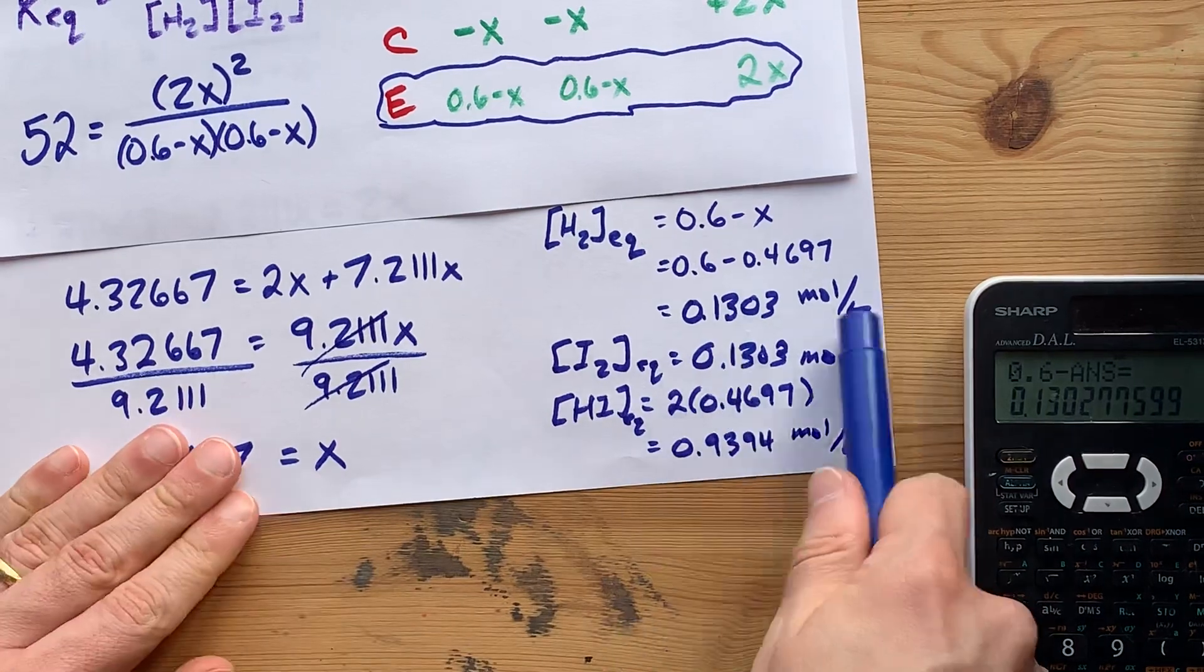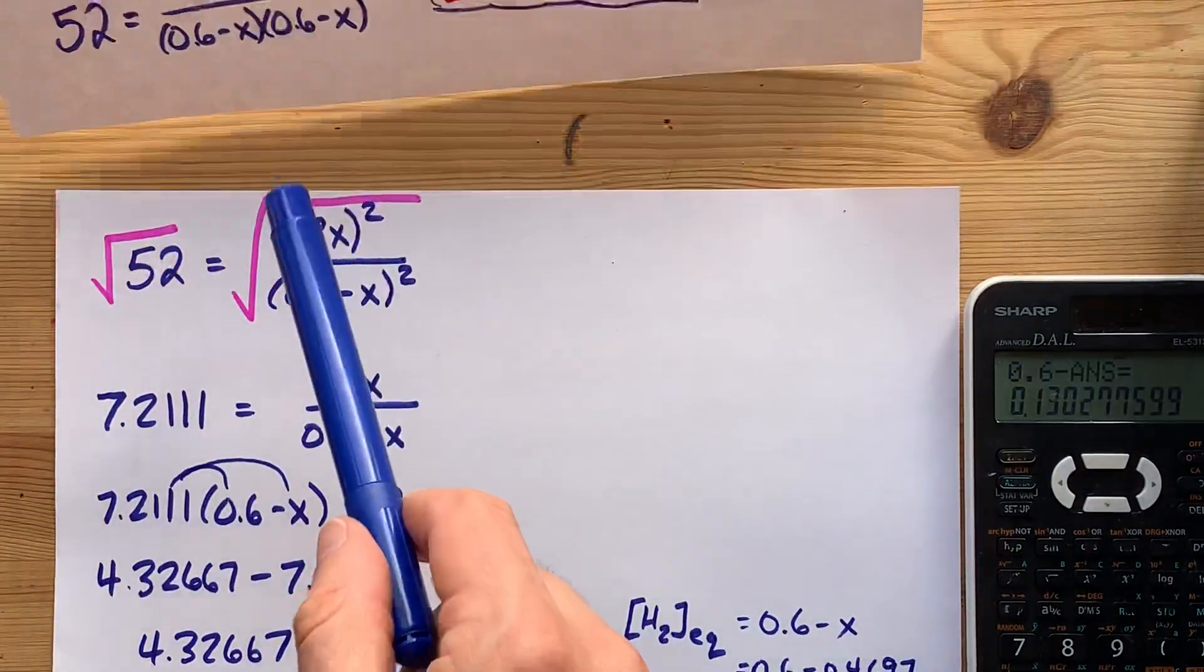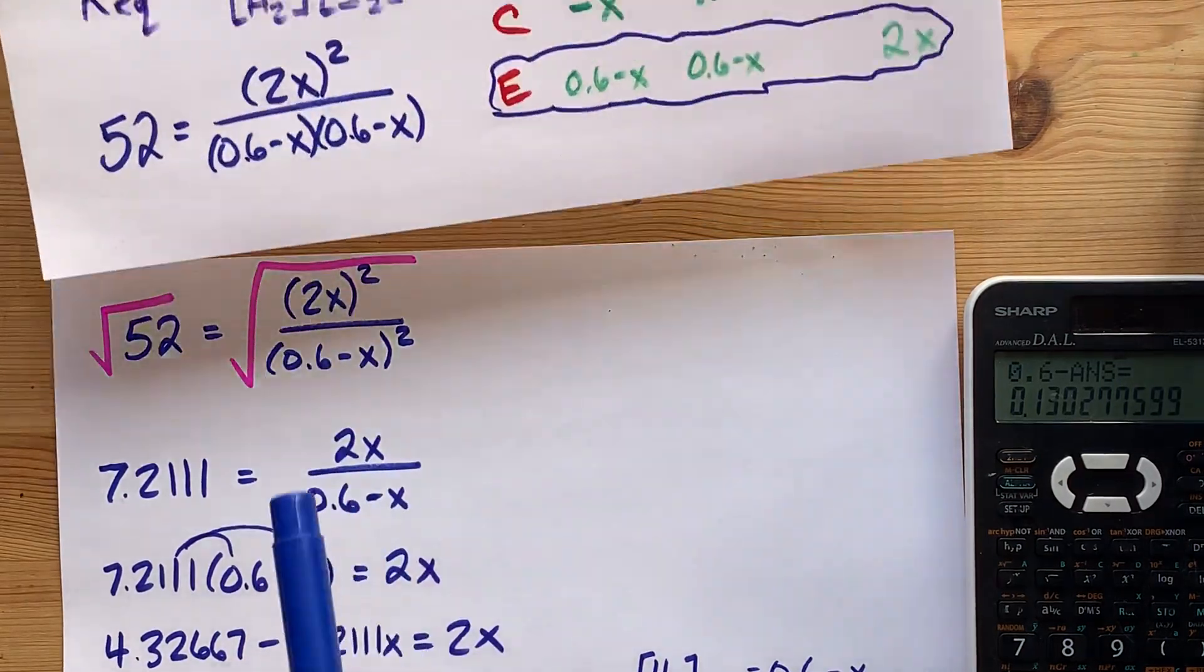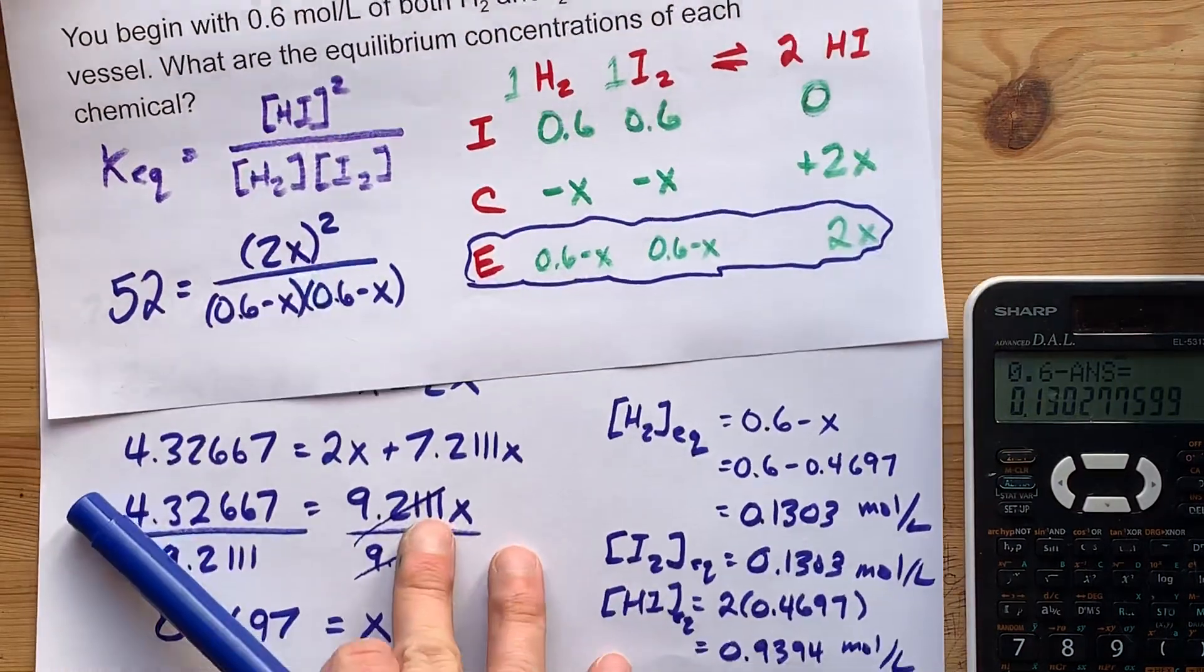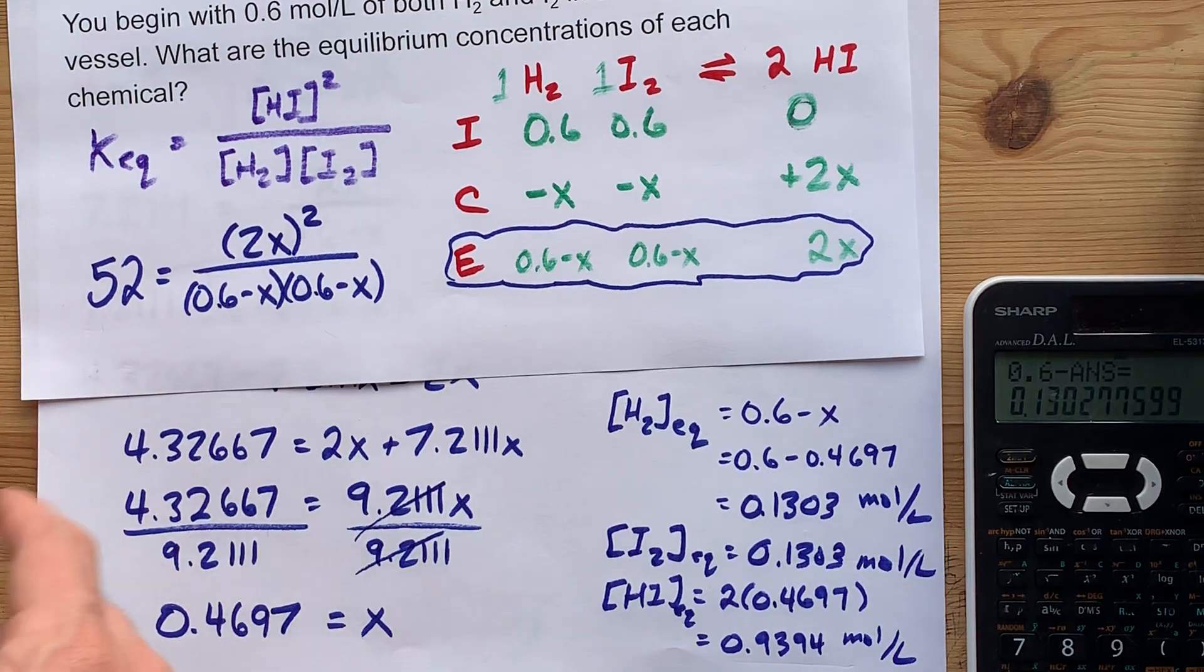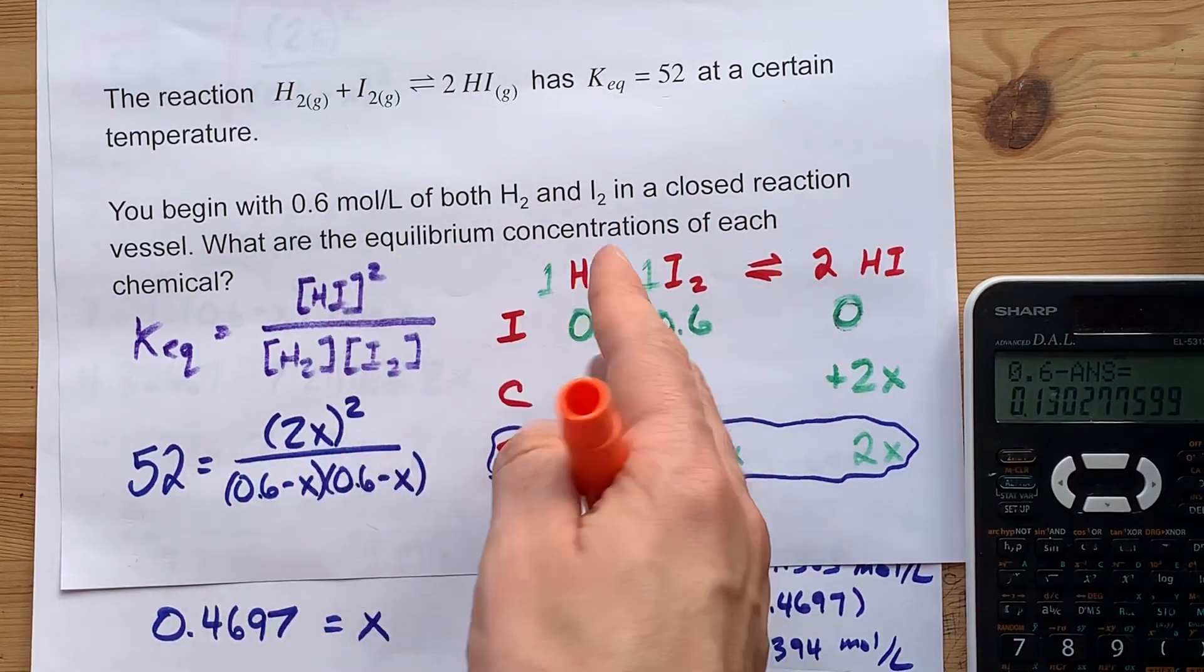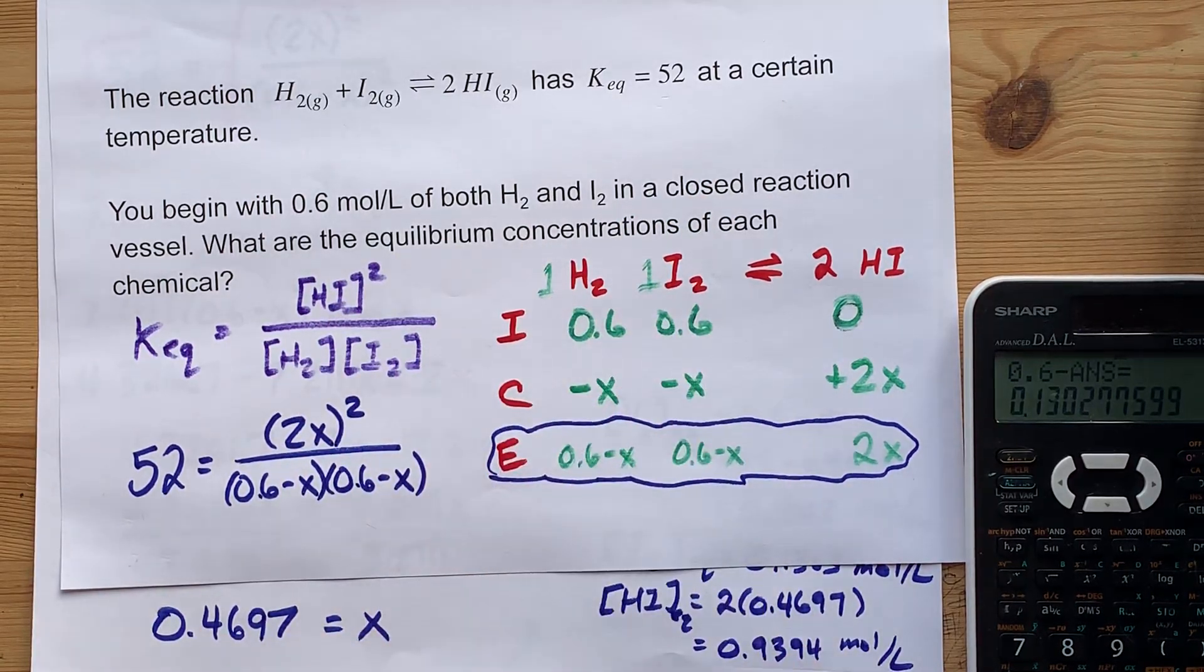Cool, so I've got my equilibrium concentrations, and I'm done. This video specifically was to show you that you can square root both sides sometimes for a shortcut in solving equilibrium problems. My last shout-out for you is that if your teacher cares about significant figures, significant digits, stuff like that, you'll have to note that this is one significant figure.